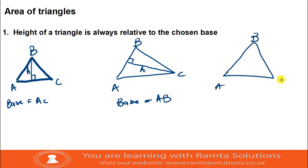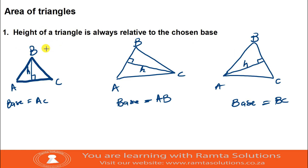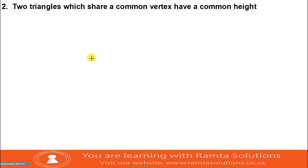I will add the third one as well - triangle ABC where the base is BC. The height will be this one here. So now we are okay with this rule: the height of a triangle is always relative to the chosen base. It is not that the height of a triangle should always be in one fixed direction.